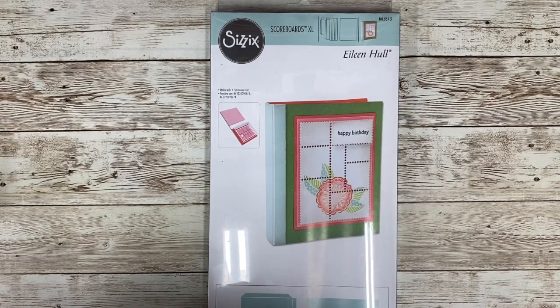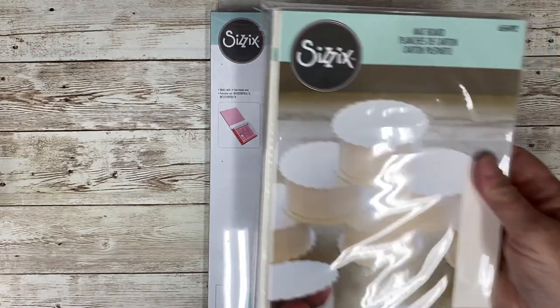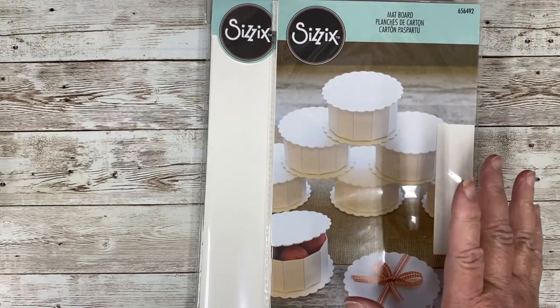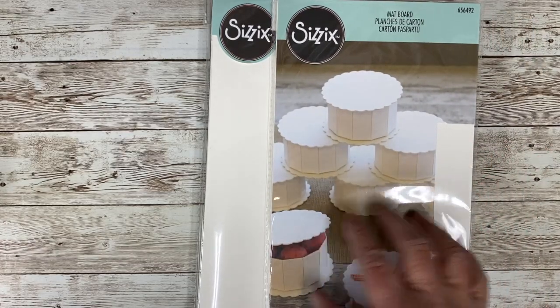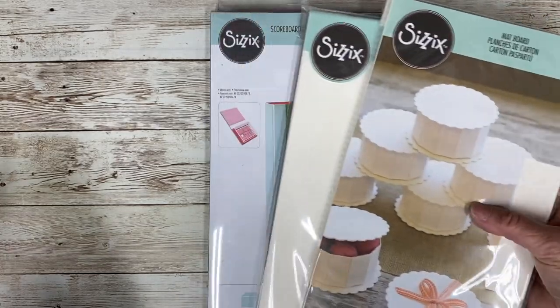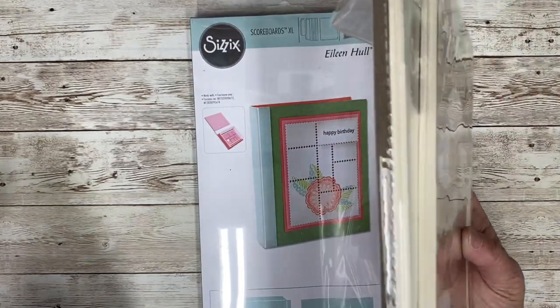A couple of the options that you can use are mat board. This is made by Sizzix and it fits right through the big shot. This is mixed media board. You can use that too. And that's like a chipboard and mat board combination.